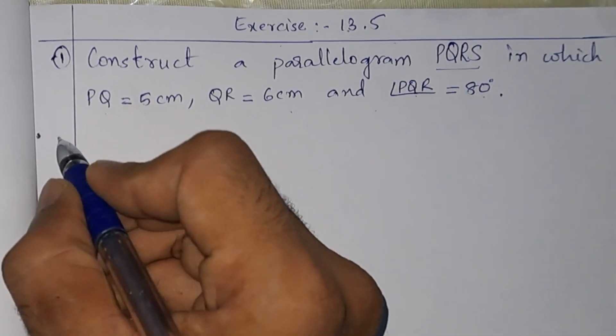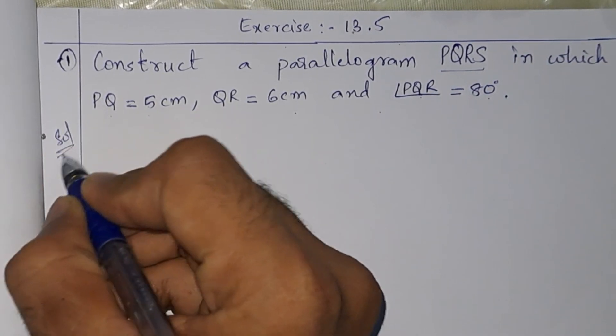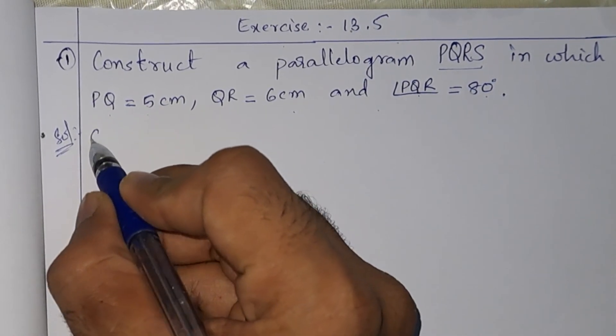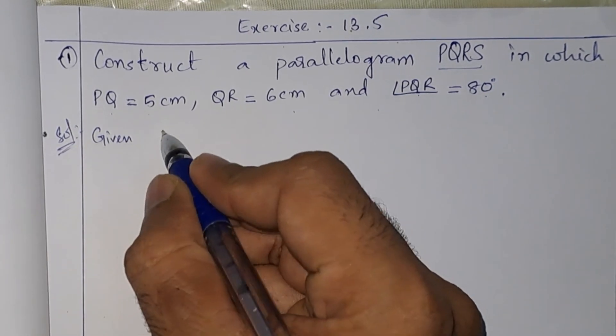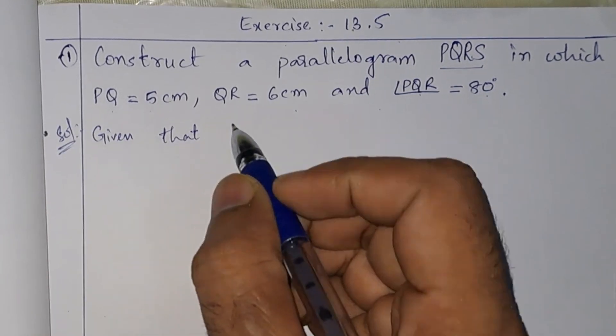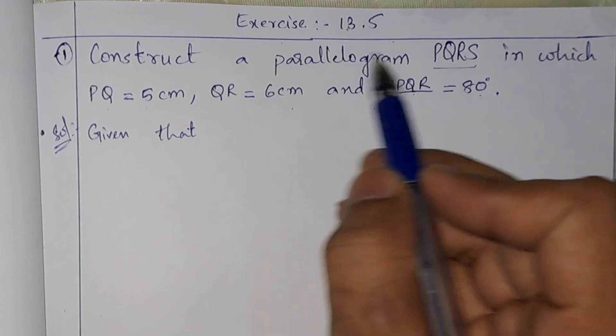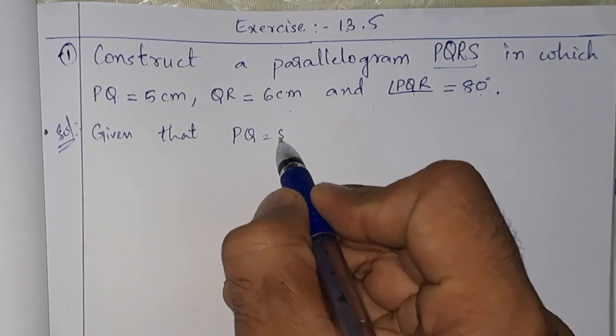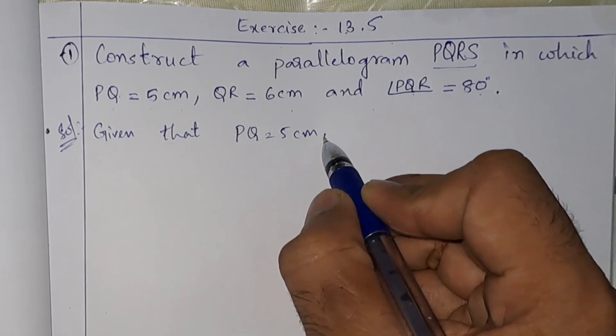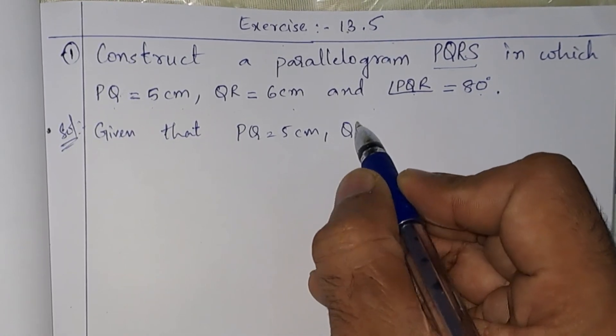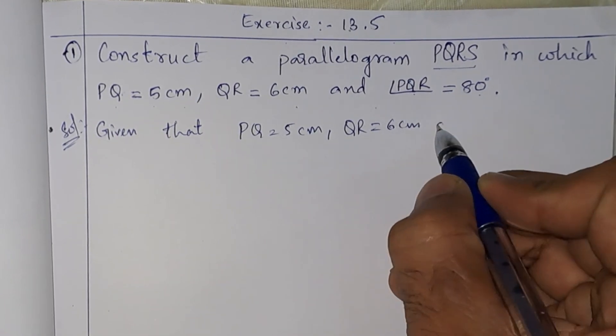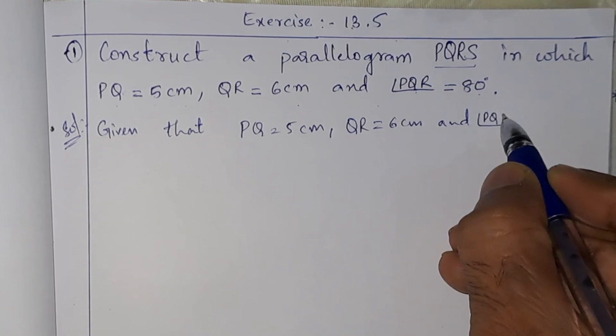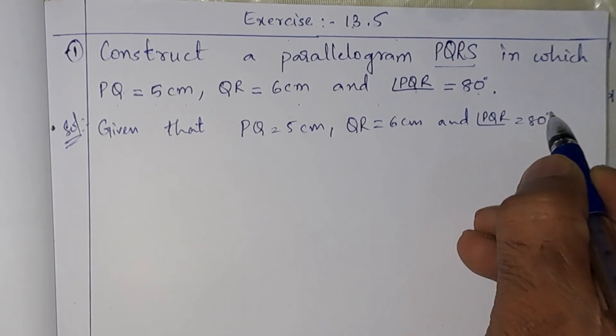So let us start the solution. In the solution, first of all I will write what is given. Given that PQ equals 5 centimeters, QR equals 6 centimeters, and angle PQR equals 80 degrees.